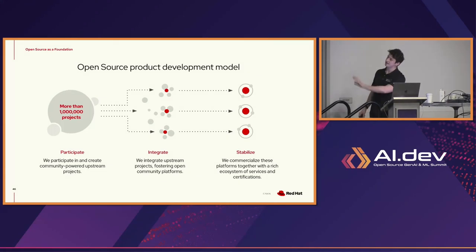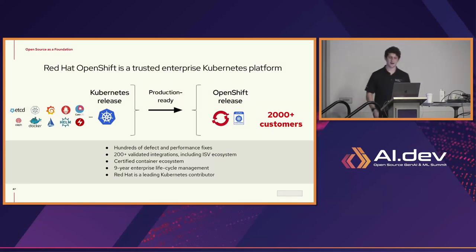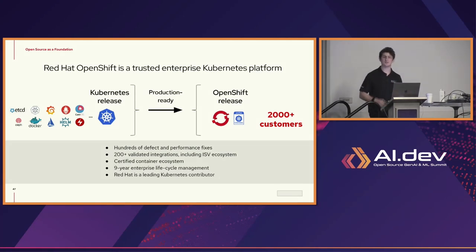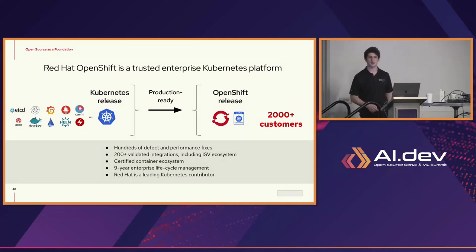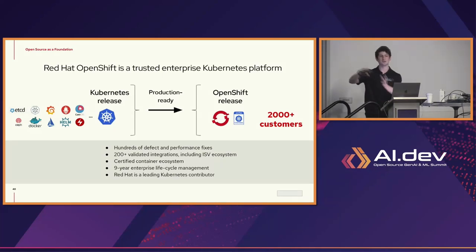We're bringing projects together for integration, sometimes into one project like Fedora — a community we sometimes manage or steer — and eventually stabilizing them into product branches, providing stability for customers. That's the business model, essentially the secret sauce of Red Hat. This is how we bring the power of open source into industries requiring stringent security, compliance, and governance. About half of you are already using Kubernetes. At Red Hat, we're a huge contributor to Kubernetes and do a lot with infrastructure.